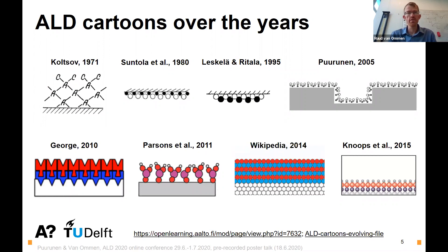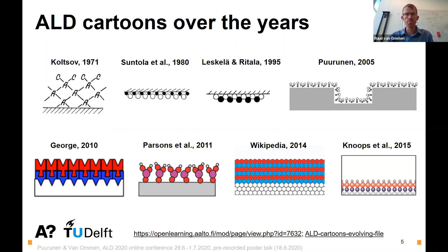The first important thing we think is how to represent the ALD process in a simple way. Over the years, right from when it was first invented in the Soviet Union, people were making sketches and schematic representations of how they thought ALD was running — typically following the ALD cycle with four different cartoons. Looking at a number of different representations, moving from black and white to color is less important, but more importantly, most of these cartoons are very regular in structure. Only Riikka's 2005 cartoon and Parsons and co-workers' 2011 version show some irregularity. Another striking fact is that most of them represent a full monolayer deposited per cycle.